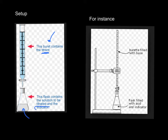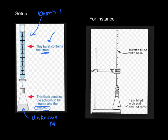You also put an indicator in the flask, which I'll talk about soon. The solution in the flask is usually unknown — that's the thing we're trying to standardize; it has an unknown molarity. The titrant has a known molarity, and we're going to use it to find the other one. For instance, we might put a base like NaOH — whose molarity we know — in the burette, and maybe some acid like HCl in the flask whose molarity we're trying to figure out.